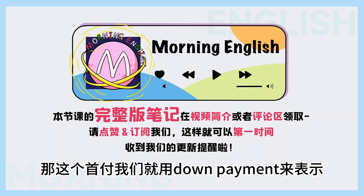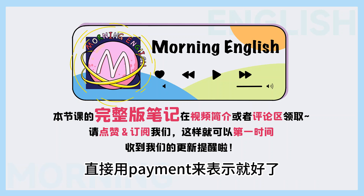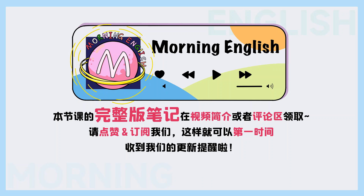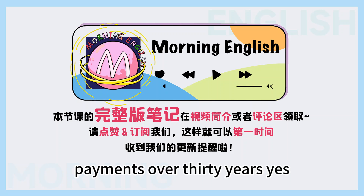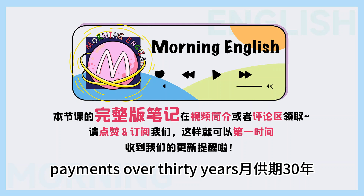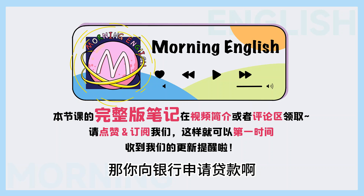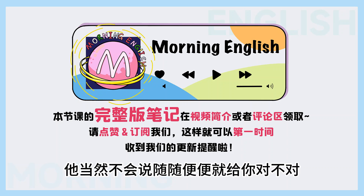那这个首付，我们就用down payment来表示。那月供呢，直接用payment来表示就好了。Payments over 30 years? Yes. 月供期30年。那你向银行申请贷款啊，他当然不会随随便便就给你，对不对？